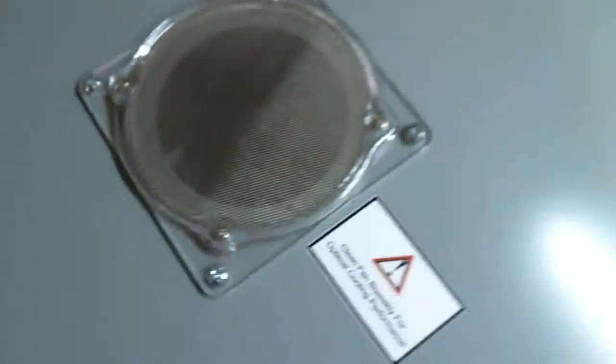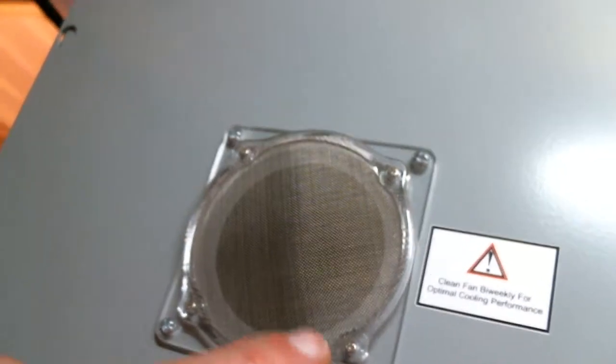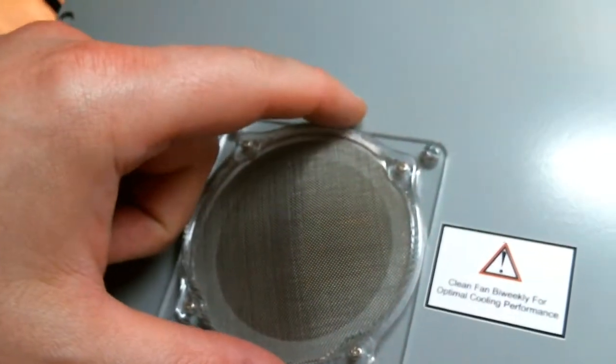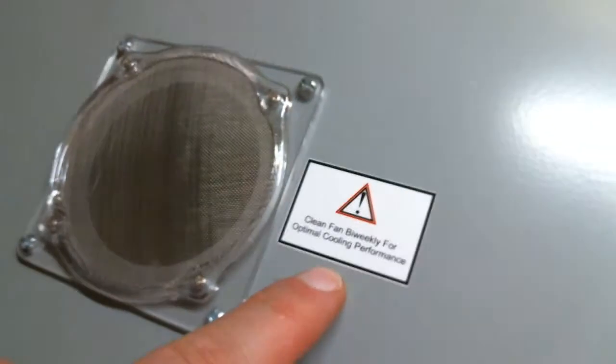Again, we do have our metal mesh fan filter, which, of course, I feel is mandatory. If you're going to do it right, do it right. Fan filter can be removed and cleaned on the outside. Very simply remove four screws. We're good. I even give you a notice on there when to clean the fan biweekly. Let me just put the camera down. I'm going to remove the lid.